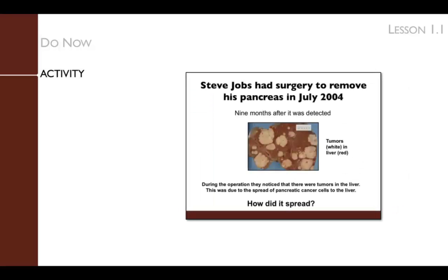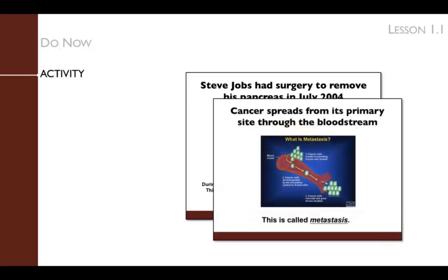Next, we ask: given that his tumor was affecting pancreatic function when it was removed, did postponing its removal by 9 months kill him? Students should note that Jobs survived 7 years without most of his pancreas, so merely lacking a pancreas wasn't sufficient to kill him. But during surgery, surgeons found his cancer had spread to the liver. We now review the concept of metastasis — defined as the spread of a cancer cell from its primary site of formation to a secondary location. Because the pancreatic tumor had metastasized to the liver and affected its function, Jobs needed a liver transplant.